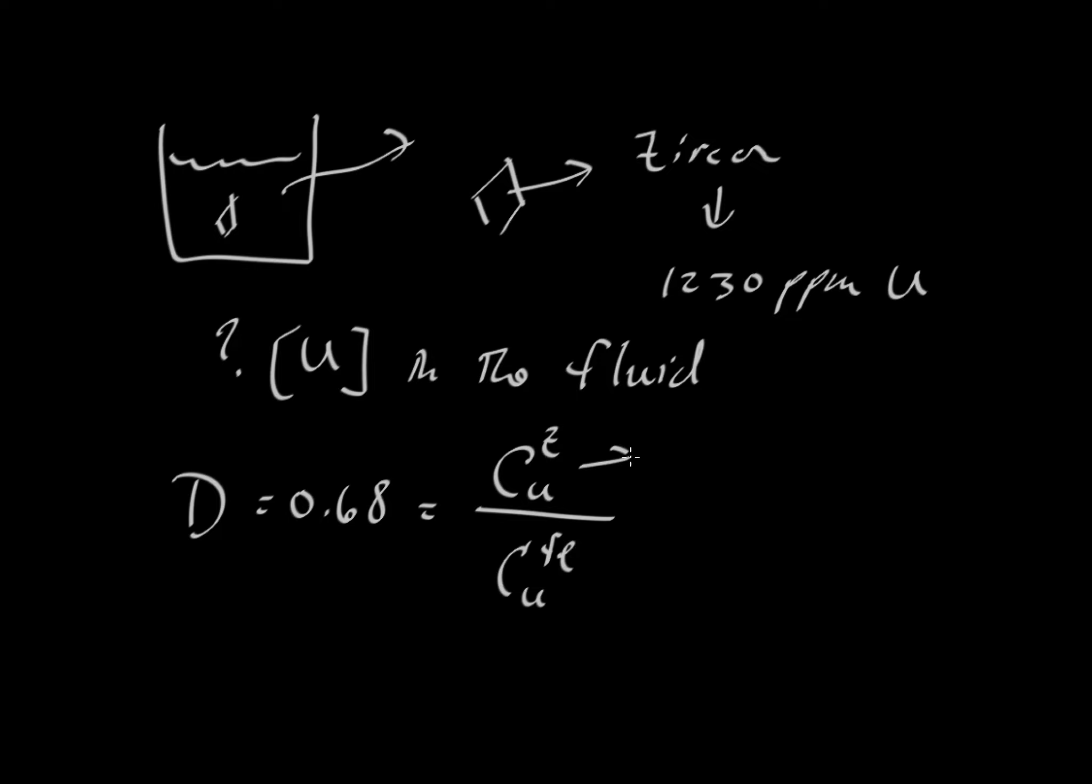that equals the concentration of uranium in zircon divided by the concentration in the fluid. We know the zircon has 1230 ppm. So we have 1230 divided by the concentration of uranium in the fluid.